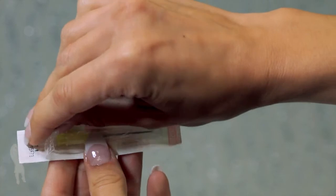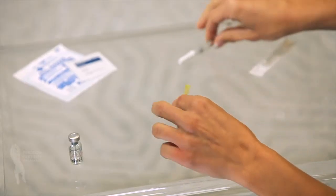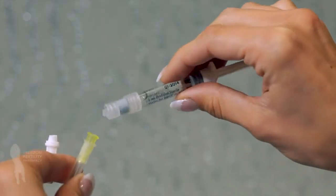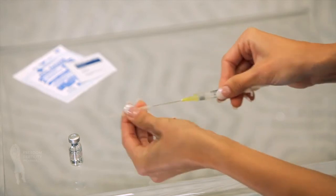Remove the wrapping of the yellow mixing needle. Remove the cover from the pre-filled syringe. Twist the yellow mixing needle on the syringe and remove the needle cover.